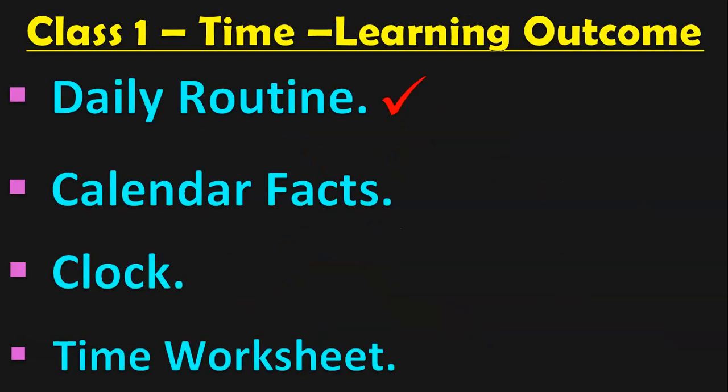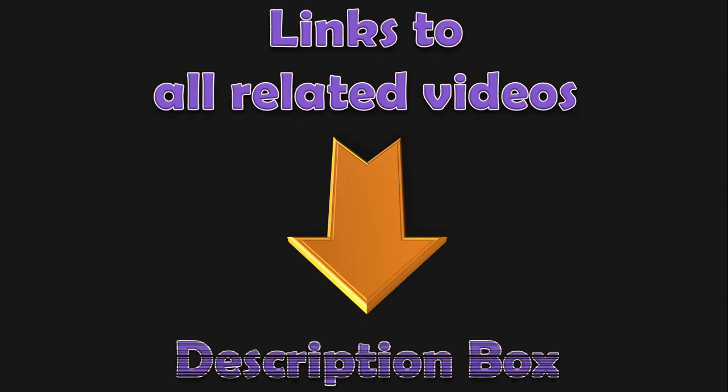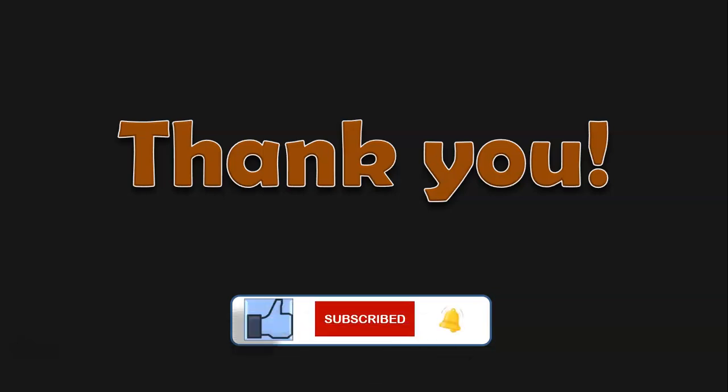Dear viewers, these are all the learning outcomes for Class 1 under the topic Time — we covered daily routine, calendar facts, and clock, and revised all these concepts in the form of a worksheet. Links to each of these videos are given below in the description box. You may also visit the on-screen video, which takes you to the playlist for Class 1 Time videos. With this, we complete the topic Time for Class 1. Next, I will be starting with the topic of Money for Class 1. If you like the video, give a thumbs up, share it with your friends, subscribe to my channel, and click the bell button for notifications. I would be very happy to receive your comments — they motivate me and help me improve and provide quality content. See you again.